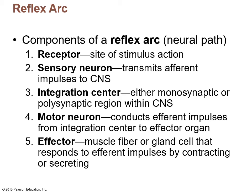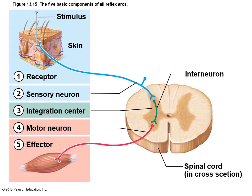There are five components of a reflex arc. First, a receptor — the site of stimulation. Then a sensory neuron, the afferent pathway that transmits impulses to the CNS. Third, the integration center in the CNS — either monosynaptic or polysynaptic with two or three neurons in the chain. Fourth, the motor neuron conducting efferent impulses from the integration center to the effector organ. Fifth, the effector — a muscle fiber or gland cell that responds by contracting or secreting.